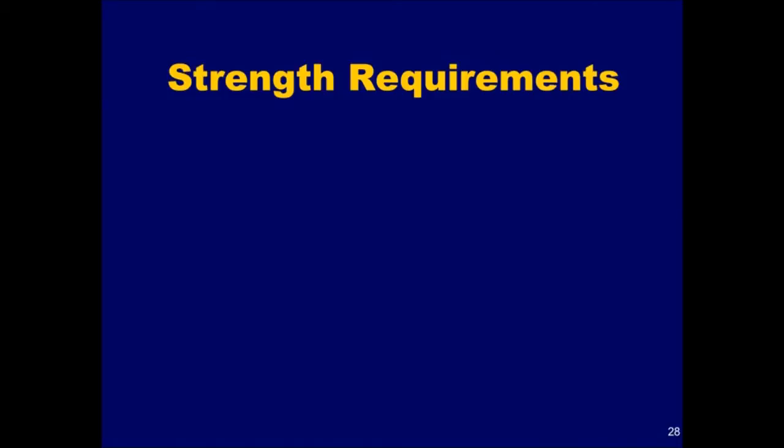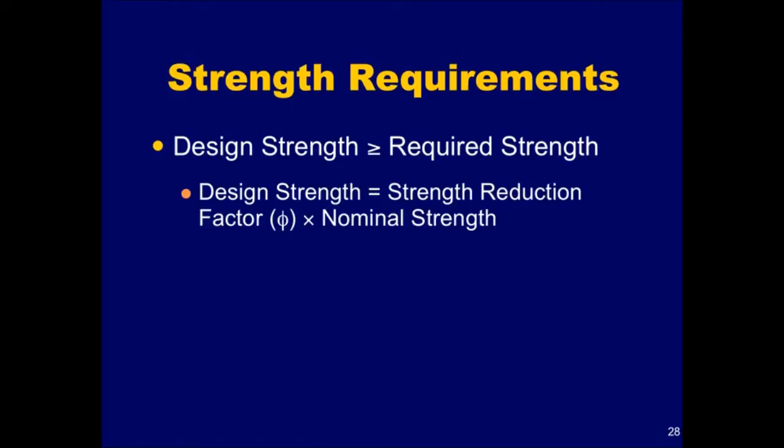A clear understanding of the code prescribed strength requirements is essential before any design can proceed. These requirements are found in Chapter 9. In general, the design strength of a member must be greater than or equal to the required strength of that member. The design strength is equal to the strength reduction factor times the nominal strength of the member. The required strength is equal to the load factor times the service load effects. Next we'll briefly discuss each of these items.